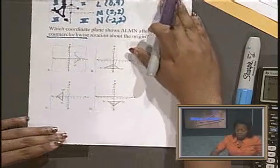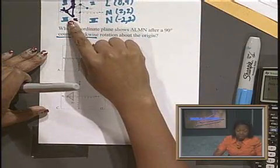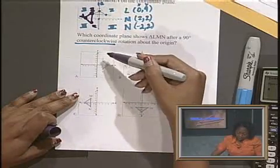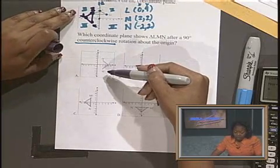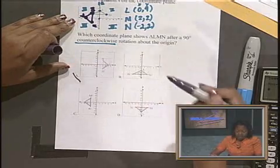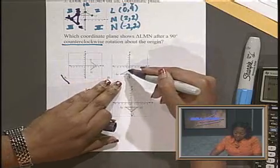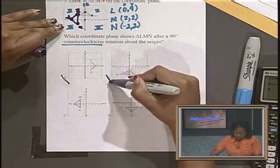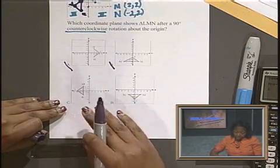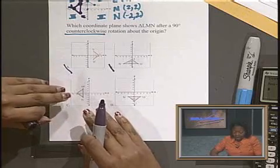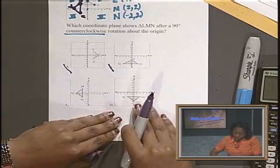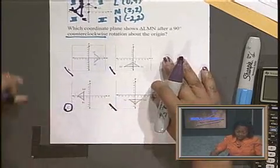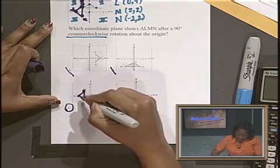We're going to look for an answer that matches what we have here. Letter A. Letter A is over in our quadrant 1 and quadrant 4. Our answer that we came up with is in quadrant 2 and quadrant 3. So we know that A is not the answer. Looking at letter B. This answer is in quadrant 3 and quadrant 4. Again, not where ours are. It is in quadrant 2 and quadrant 3. That's not the answer. Letter C is our answer choice. It does match from here to here. Just like the one we worked on together.